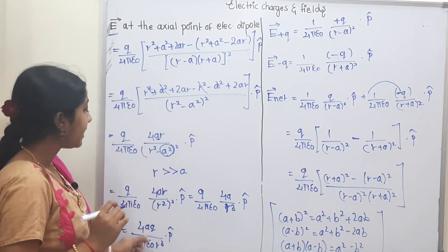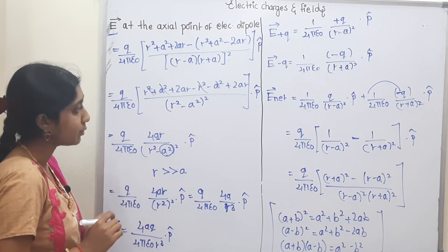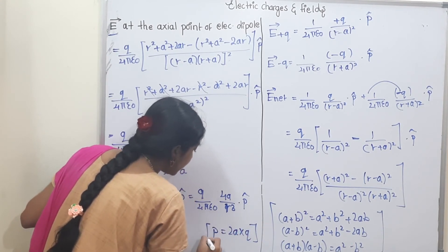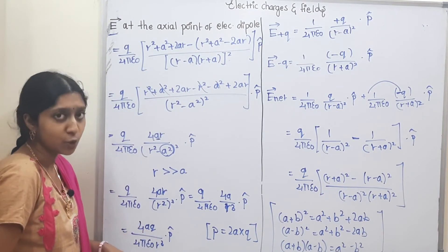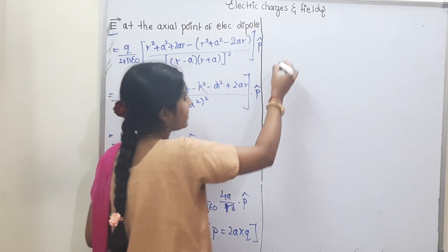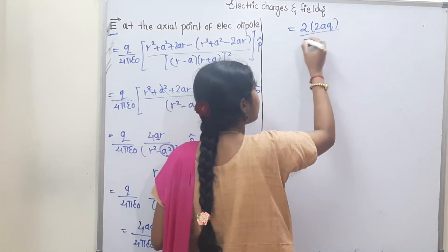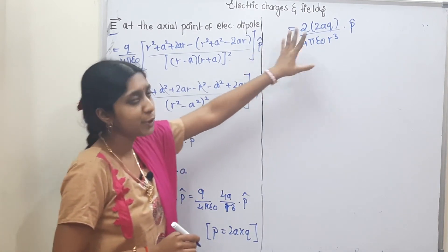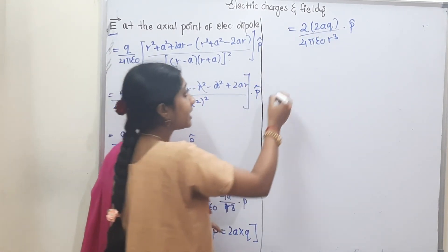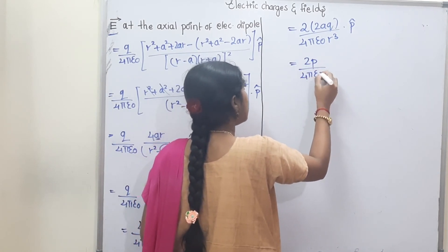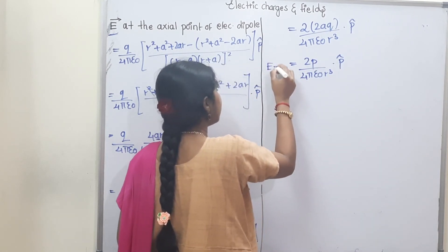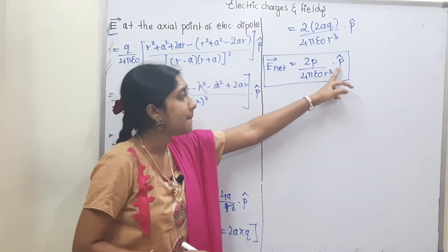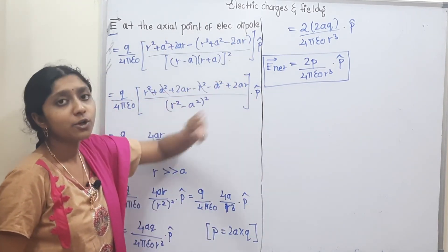We now substitute the dipole moment. The dipole moment is P = q × 2a, so q × 4a = 2 × (2aq) = 2P. Therefore the final result is: E_net = 2P/(4πε₀r³) × p̂. This is the electric field at the axial point of an electric dipole.